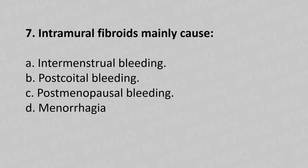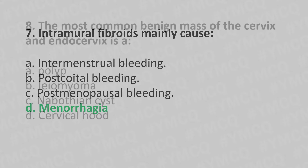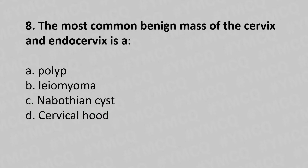Question 7: Intramural fibroid mainly causes — option A: intramenstrual bleeding, option B: post-coital bleeding, option C: post-menopausal bleeding, option D: menorrhagia. The answer is option D: menorrhagia.